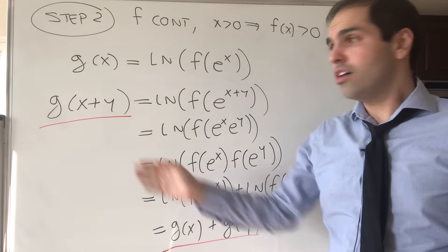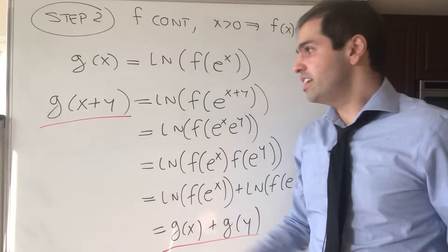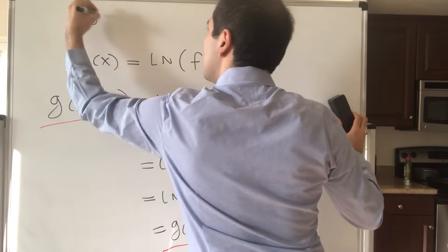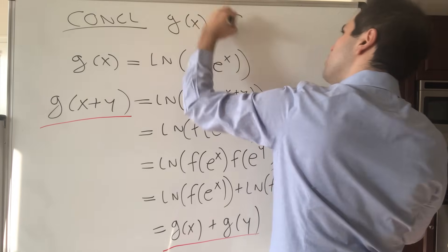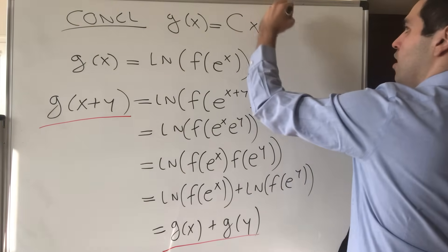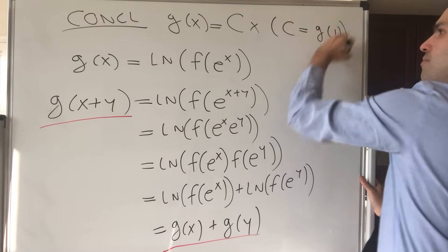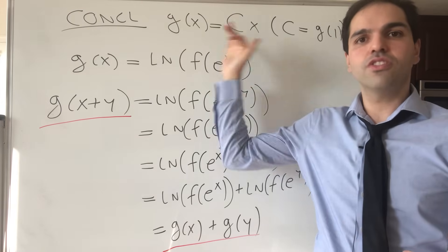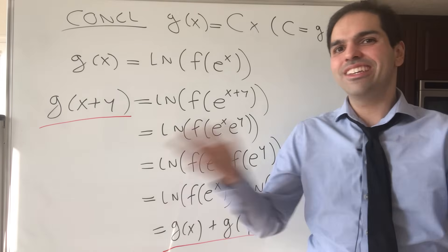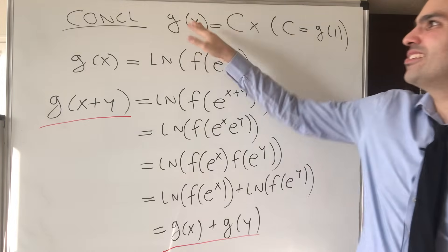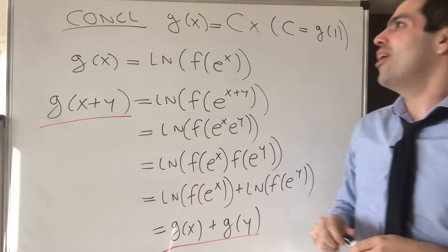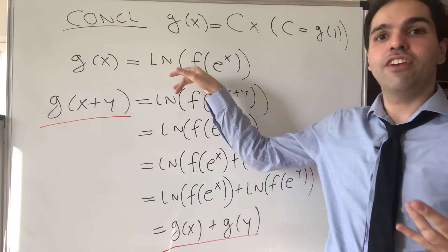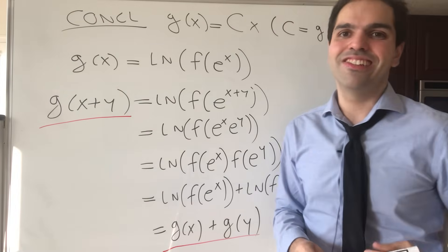So the conclusion of this step is that g(x) equals c times x for some constant c — in fact, c is just g(1). That's in the continuous case. Before moving on, I should mention there are many discontinuous functions that satisfy Cauchy's equation. One construction uses a basis of ℝ over the rational numbers — you can define g to be 1 on √2 and 0 everywhere else — and you can define f via this equation if you want a discontinuous example.